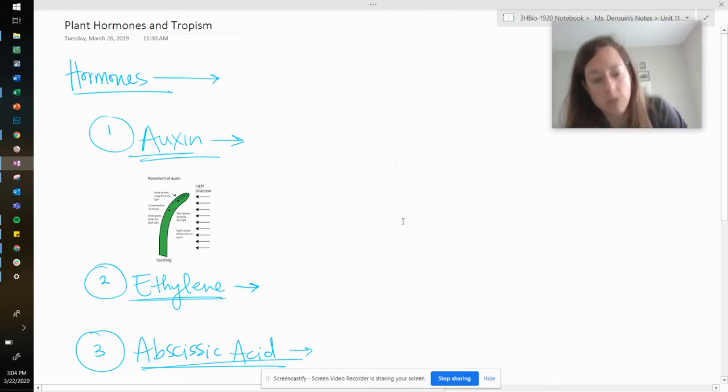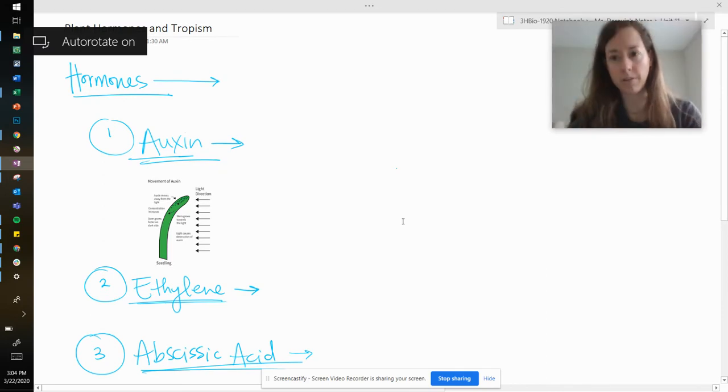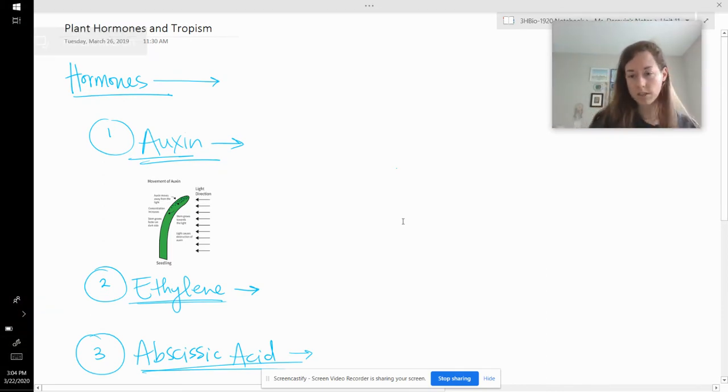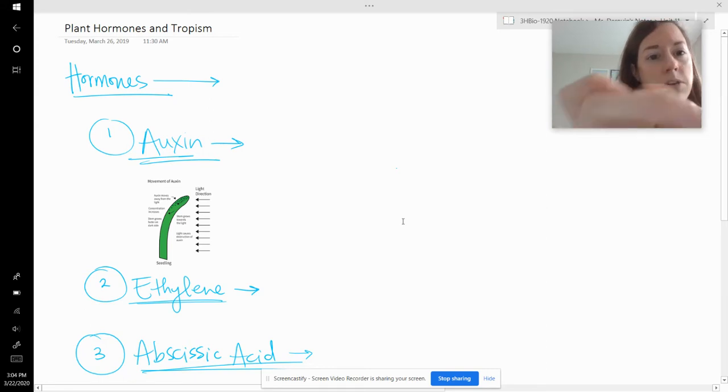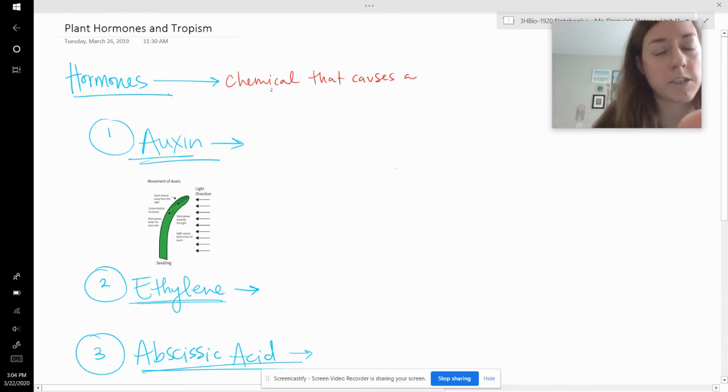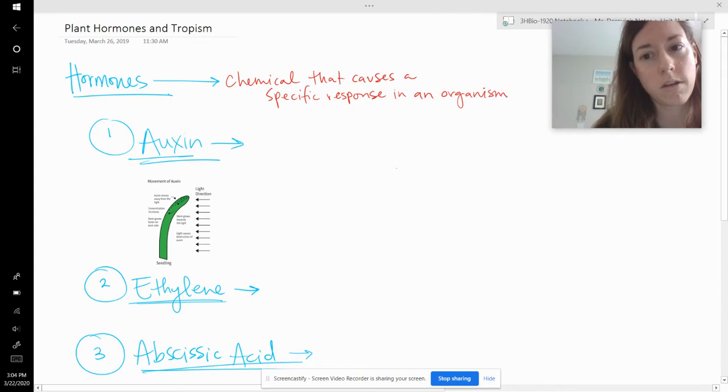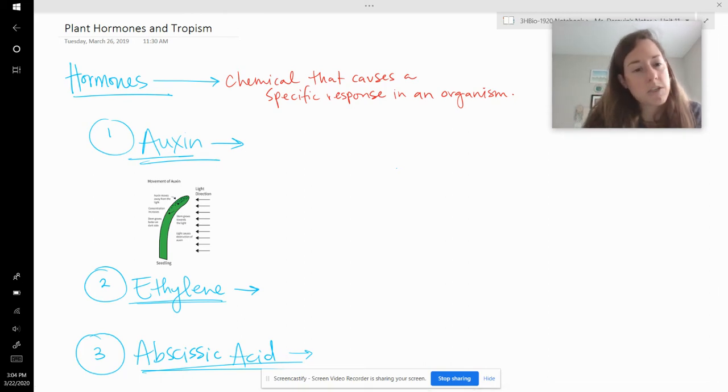We'll start by talking about hormones. So you might have never thought about this before, that plants have hormones, just like animals do, just like us. And a hormone is defined as just a chemical that causes a specific response in an organism. And so there are many for plants, but I'm just going to talk about three of them: auxin, ethylene, and abscisic acid.